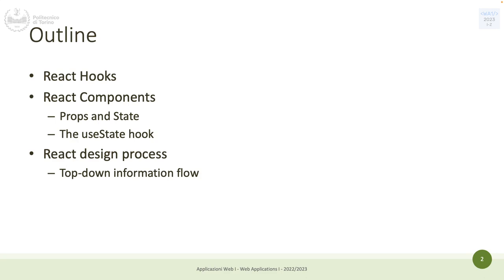A prop is already available and you pass it as a property in a component, then the component writes props.something and gets access to whatever you passed. You can set it like a normal variable. State is different — it has its own way to be set up, and that's why we introduce a concept called a hook, because setting and creating state requires hooks. This is the first hook we are going to see.